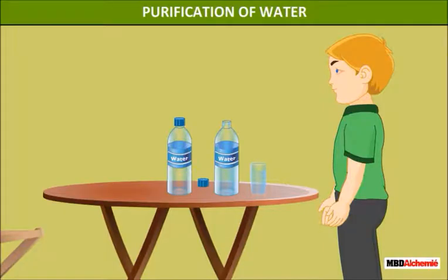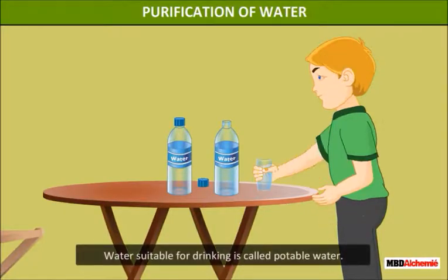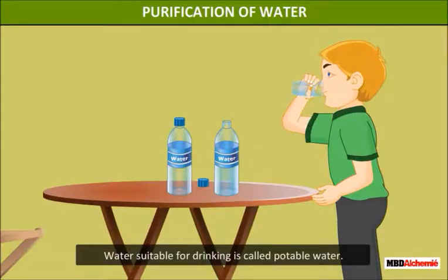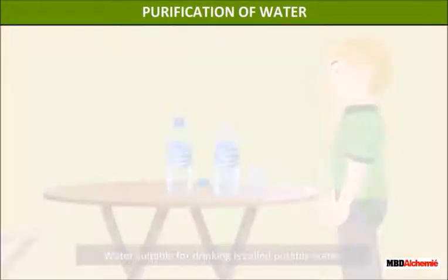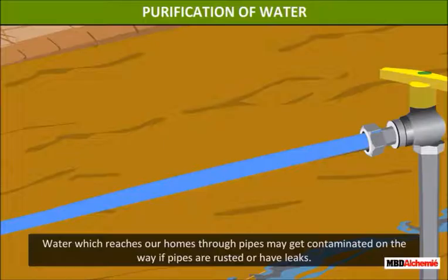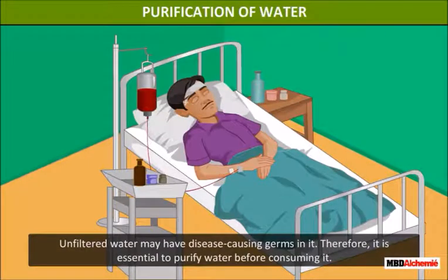Purification of water: water suitable for drinking is called potable water. Water which reaches our homes through pipes may get contaminated on the way if pipes are rusted or have leaks. Unfiltered water may have disease-causing germs in it.